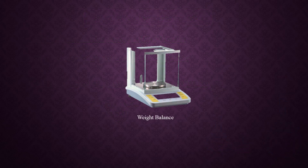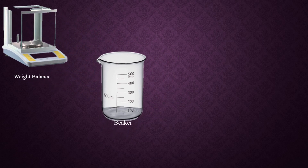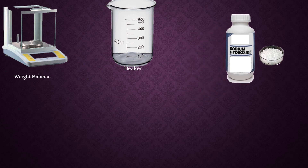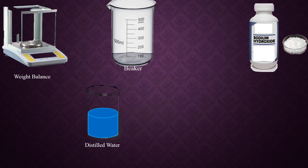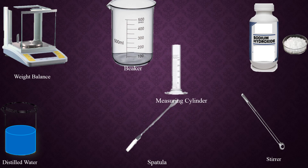To prepare 0.1 molar solution of sodium hydroxide in 500 milliliters, the apparatus required are: weight balance, beaker, sodium hydroxide, distilled water, stirrer, spatula, funnel, and measuring flask.